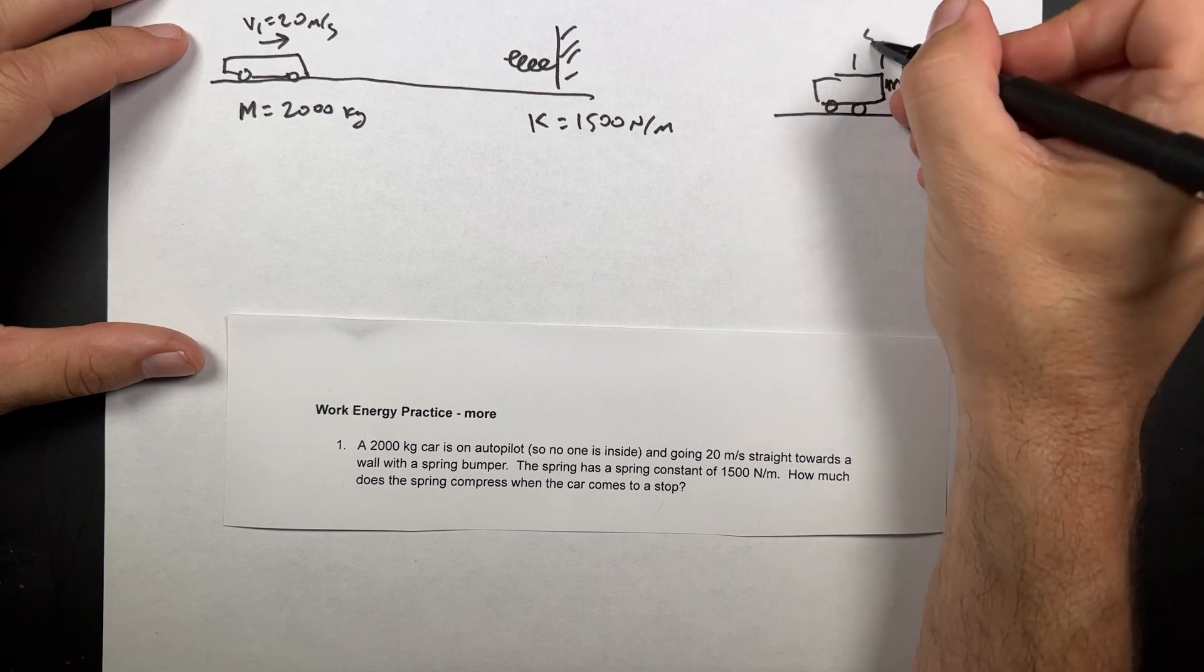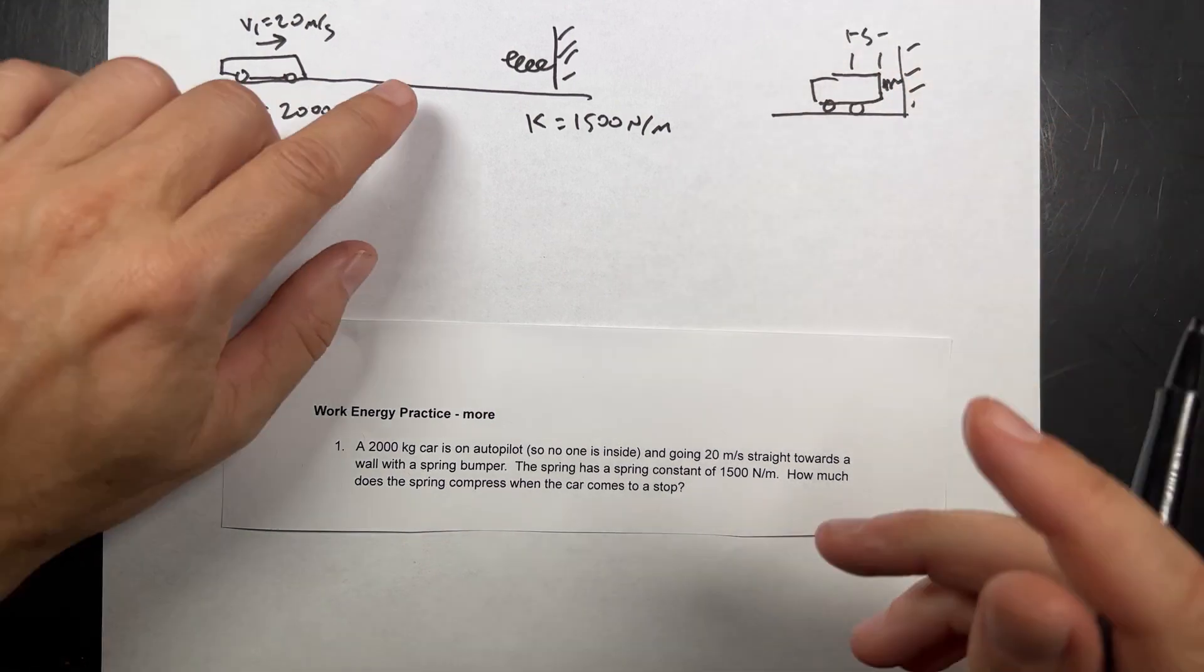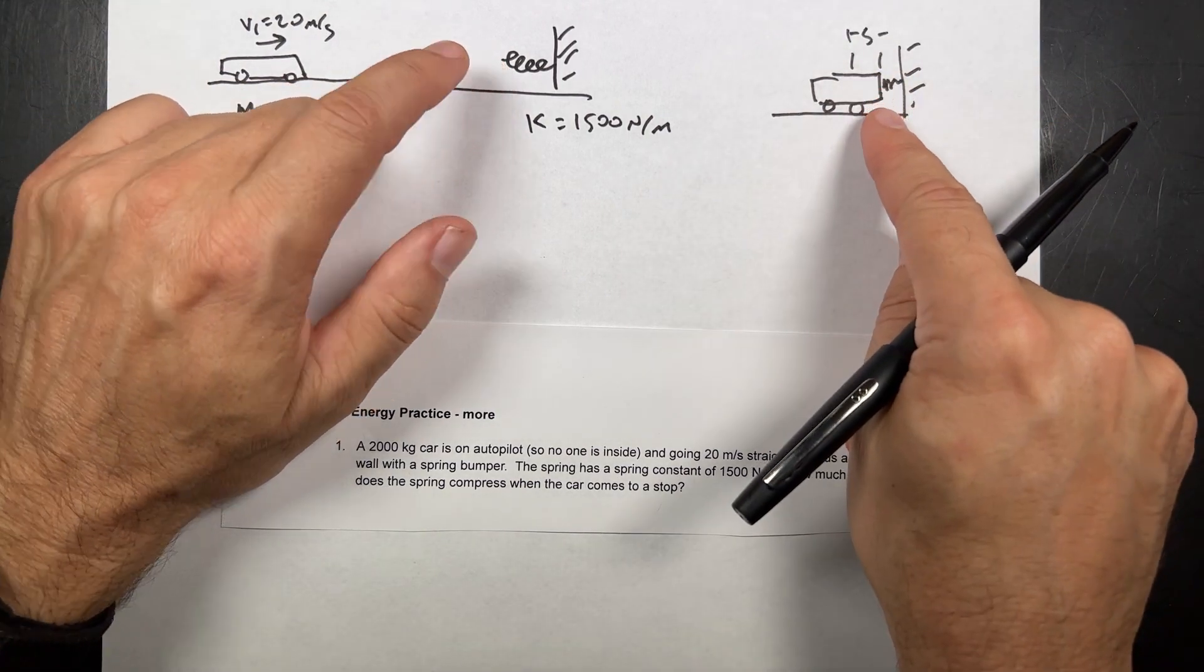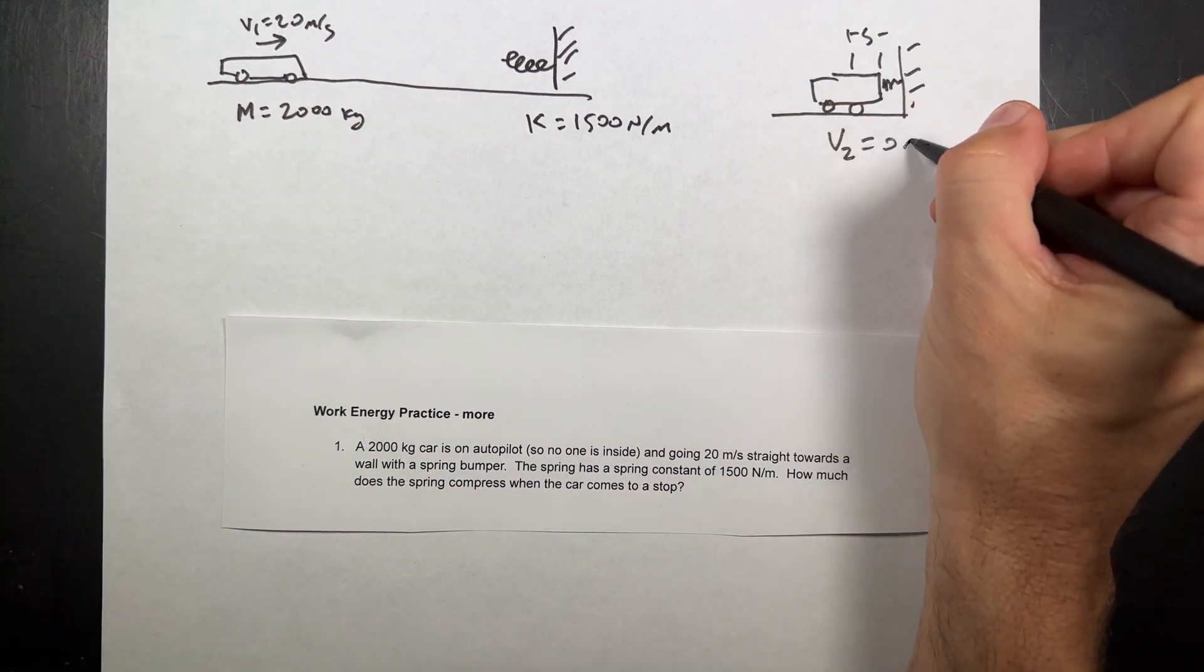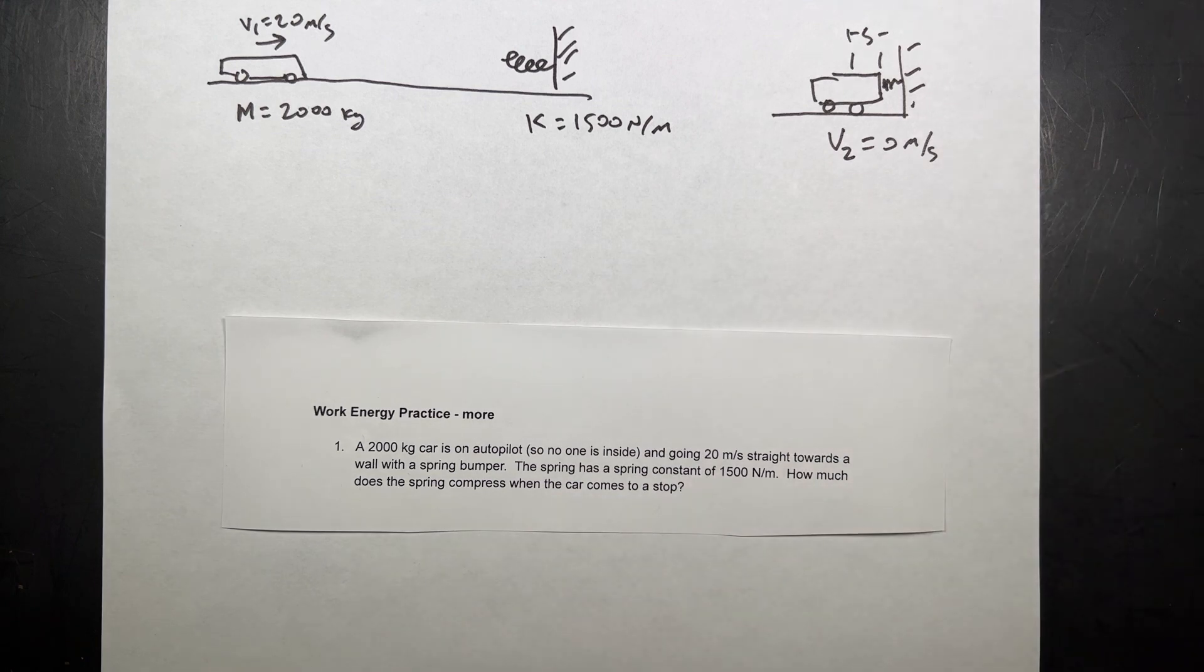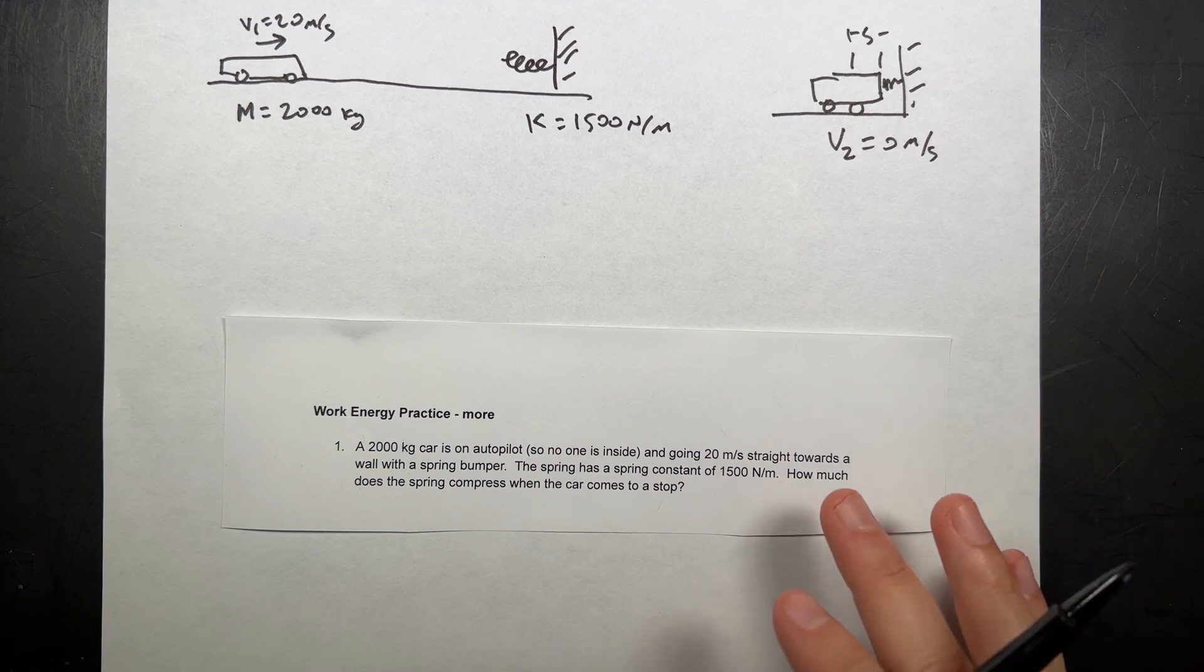And this is going to be some distance s that gets compressed. So it went from here to uncompressed, to here compressed. And also, I'm going to put V2 equals zero meters per second. So it stops, right? It could rebound, but we want to know the maximum amount of compression.